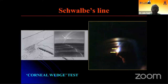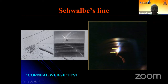Hence you perform what is known as the corneal wedge test. When the slit beam is focused into the angle structures, the slit beam gets divided into an epithelial beam and an endothelial beam, and it comes to a focus at the Schwalbe's line.